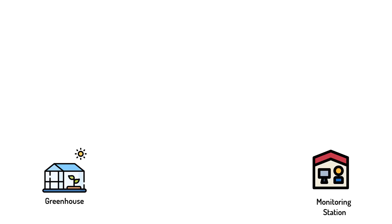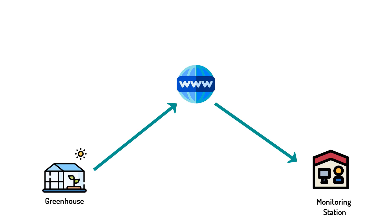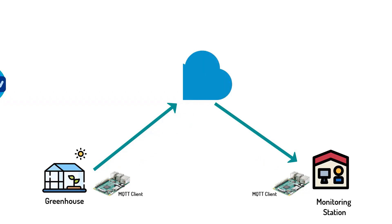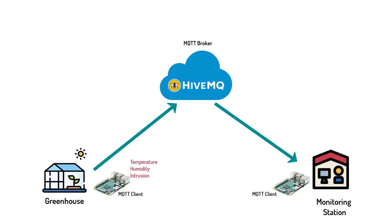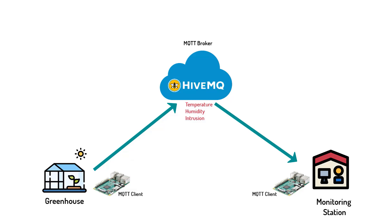To build our greenhouse remote monitoring system, our Raspberry Pi devices will act as MQTT clients sending and receiving MQTT messages. We'll use HiveMQ Cloud as the centralized MQTT broker. The greenhouse control unit is responsible for measuring temperature, humidity, and detecting intrusion, then publishing data to the HiveMQ Cloud broker under a specific topic. The remote monitoring station will subscribe to the same topic on the broker.